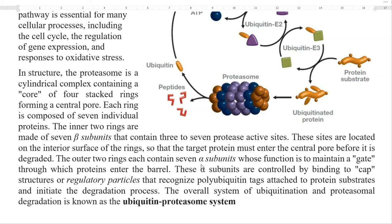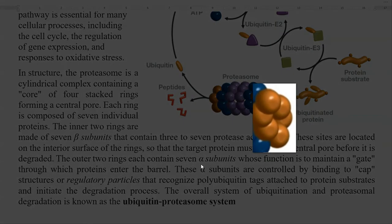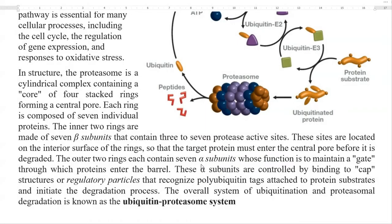These active sites are located on the interior surface of the rings, so the target protein must enter the central pore before it is degraded. The outer two rings, shown in dark blue, contain 7 alpha subunits which mainly function as a gate through which proteins enter the proteasome barrel. These alpha subunits are controlled by cap structures, shown in yellow, which are regulatory particles that recognize the polyubiquitin tags attached to damaged protein substrates and initiate the degradation process.